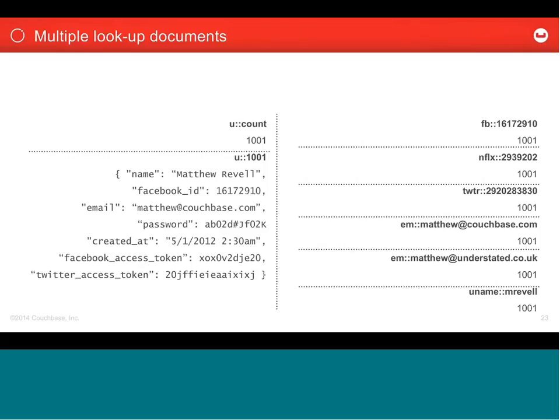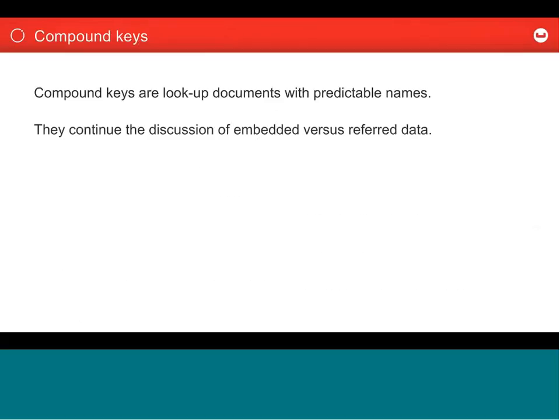In other databases you might use collections or something similar to group types of data. But in the Couchbase world, our nearest grouping is a bucket — and a bucket is more of an allocation of resources than a semantic grouping or namespacing. So we tend to namespace keys using these prefixes. Compound keys and lookup documents with predictable names put into practice the idea of referring to data by using a lookup document as a manual secondary index.